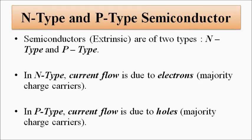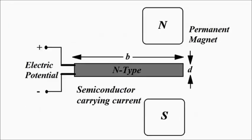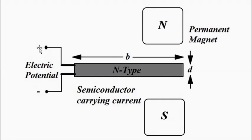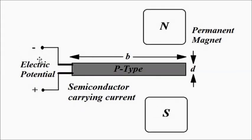For the determination of the unknown semiconductor type: suppose we place an n-type semiconductor in the magnetic field, with the current direction perpendicular to the magnetic field from the permanent magnet. An electric potential will be induced across the ends — let's say with a polarity of plus at the top and minus at the bottom. If we then connect a p-type specimen instead, the polarity will be reversed: minus at the top and plus at the bottom.